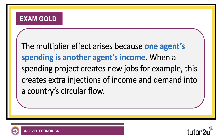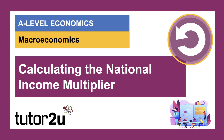The multiplier effect arises when one agent's spending is another agent's income — that's a key part of the discussion. The effect can be both positive and negative depending on what's happened to the component of demand. In the second video in this series, we'll look at numerical examples of how to calculate the value of the multiplier. I hope this introduction has been helpful — stay with us, stay safe, and stay focused. Hope to see you again soon, take care.